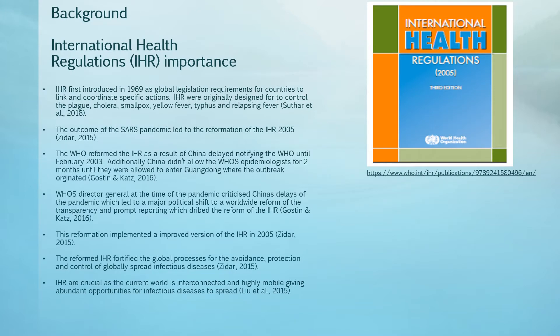The International Health Regulations, IHR, were first introduced in 1969 as global legislation mandating countries to coordinate specific actions on infectious diseases. The regulations were originally designed to control the plague, cholera, smallpox, yellow fever, typhus and relapsing fever. The outcome of the SARS pandemic was a wake-up call to the WHO for reforming the IHR in 2005. The reform was led by the WHO as a result of China's two-month delay in notifying the WHO of the outbreak, and it also taking two months for China to allow WHO epidemiologists to enter Guangdong. The WHO's Director-General at the time criticised China's delay, which led to a major political shift towards reforming worldwide reporting and transparency, pushing the reform of the IHR.